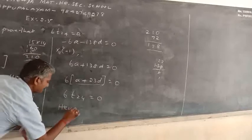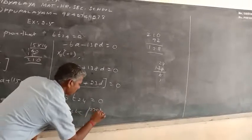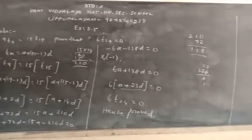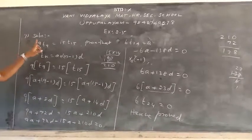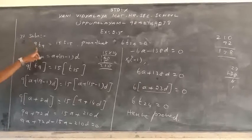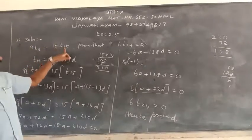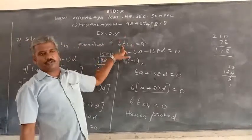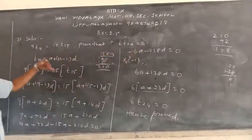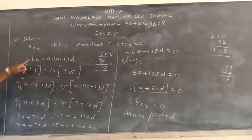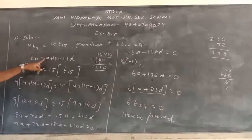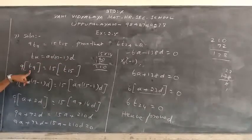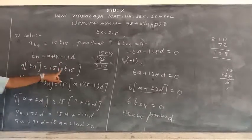Hence proved. Once more explained. Given the sum: T9, 9th term 9 times is equal to 15 times 15th term. To prove that 6 times 24th term is 0. Now, TN formula: TN equal to A plus N minus 1 into D. 9 into T9 is equal to 15 into T15.